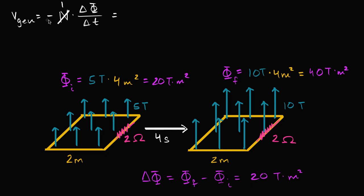You might ask: what is this negative sign? It's a bit strange in terms of how we're defining direction. I'm not a huge fan of this negative sign. If you look it up in a textbook when you're not using calculus, they'll often say it's a reminder to use Lenz's Law. The negative sign does make sense if you're using vectors and more sophisticated mathematics, but essentially it's saying that the voltage induced is going to be in a direction to induce a current whose induced magnetic field will counteract the change in flux — that's Lenz's Law.